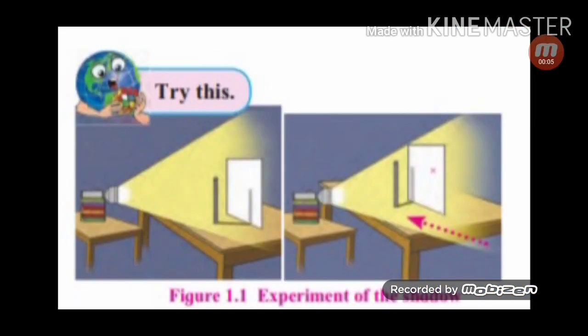Try this activity. Paste a large white paper on one side of the table. Place a torch in front of the table in such a way that it won't move. Stand a rod or candle between the white paper and the torch — see the figure. Direct the light beam of the torch so that the shadow of the rod or candle falls on the paper. Mark the position of the shadow. Move the table along with the rod or candle from one side to the other slowly. Observe, mark, and note the change in the location of the shadow.